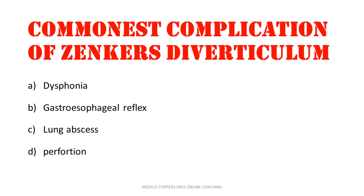The first complication of Zenker's diverticulum. It will lead to dysphonia, gastroesophageal reflux, lung abscess, and perforation. What could be the answer? The answer is lung abscess.